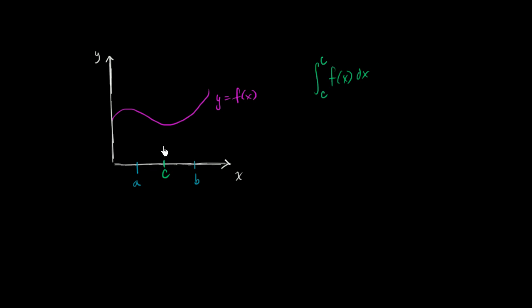If you try to visualize it, you're thinking, the area under the curve f of x above the x-axis from x equals c to x equals c. So this region that we think about, it does have a height—the height here is f of c—but what's the width?